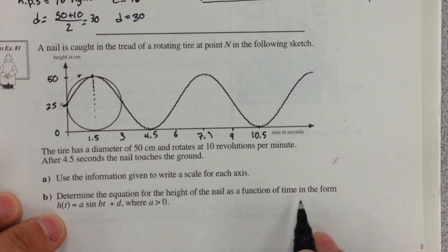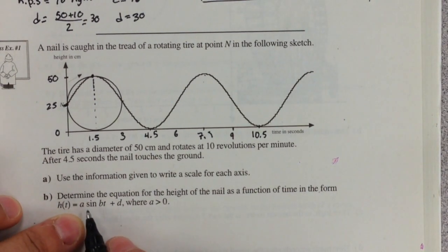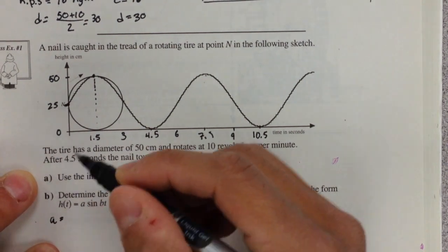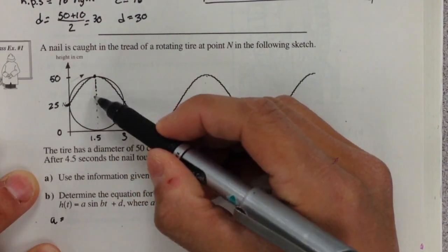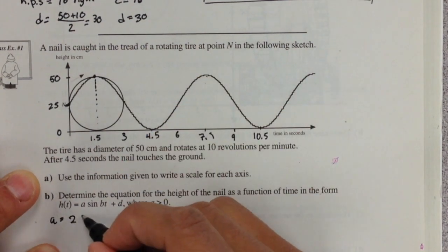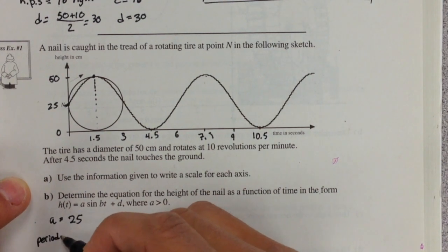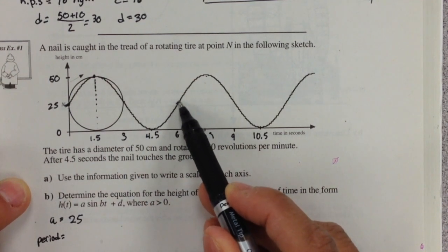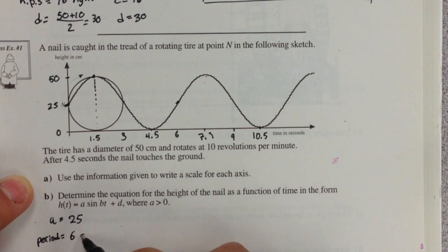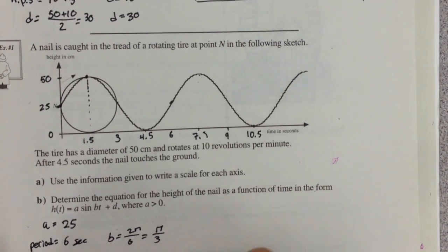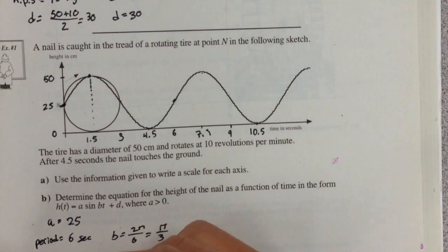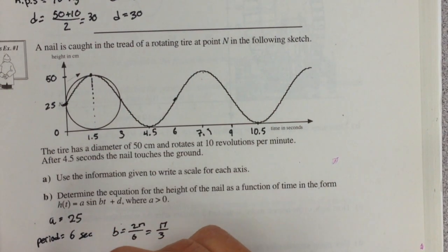To determine the equation for the height of the nail as a function of time in the form h(t) = a sin b(t + c) + d, where a has to be greater than zero. Our amplitude, we already know halfway in between the max and minimum point is 25. So my amplitude is 25. My period, let's look for that repeated motion. It would be six seconds, which means that my b value is going to be equal to 2π over 6 or π over 3.